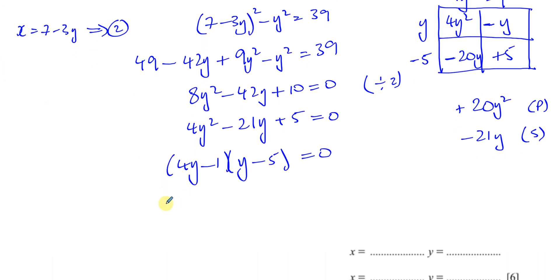So here you're going to have either 4Y minus 1 equals 0 or Y minus 5 equals 0. So Y is equal to a quarter or Y is equal to 5.